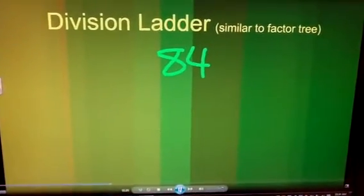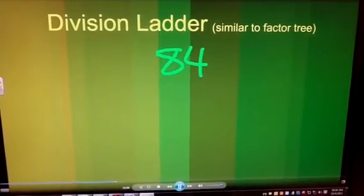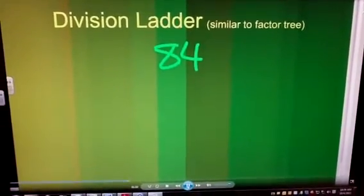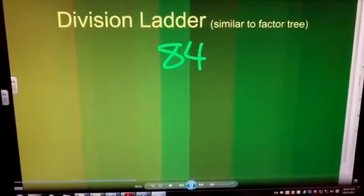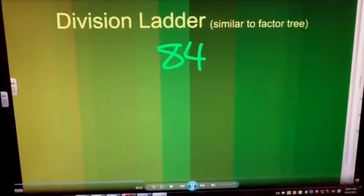We move back to our division ladder. This is probably one of the easiest ways to find the prime factorization using the division ladder. We have 84.